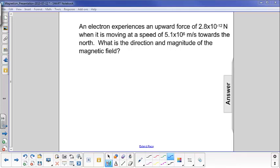An electron experiences an upward force of 2.8 times 10 to the minus 12 newtons when it is moving at a speed of 5.1 times 10 to the 6 meters per second towards the north. What is the direction and magnitude of the magnetic field?